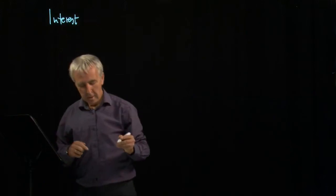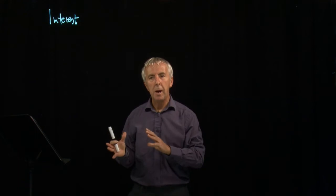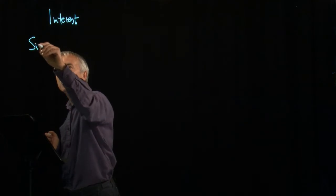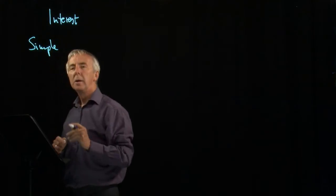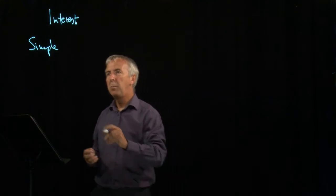We're going to look now at some financial mathematics and start by thinking about the idea of interest, where you give your money to someone and they pay you for it by giving you interest, and at the end you get back the original amount plus the interest. There are two ways of calculating this: one is called simple and the other is compound.